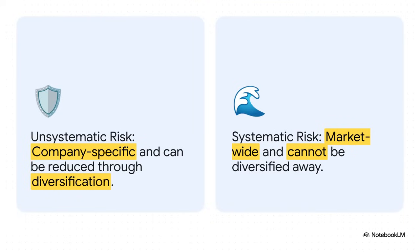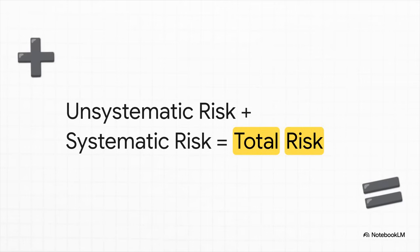That brings us to the other side of the coin: systematic risk. While diversification is great for protecting you if one company goes under, it can't save you from risks that hit the entire market — think a recession or a big global event. That's the kind of risk everyone is exposed to. When you're thinking about your total risk, it's always a mix of the company-specific stuff you can manage and the market-wide stuff that you can't.